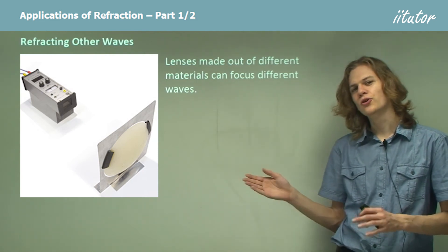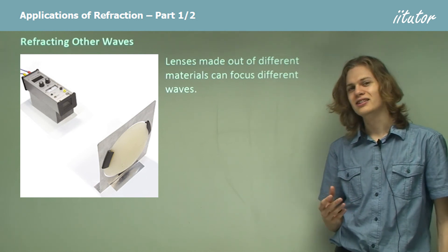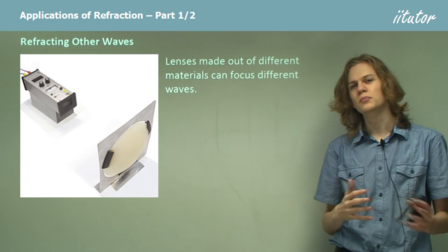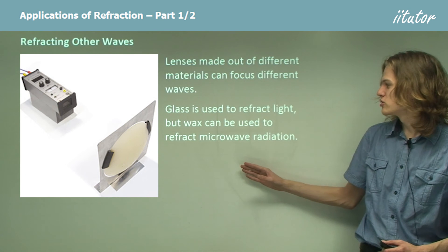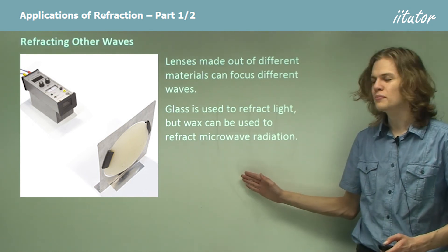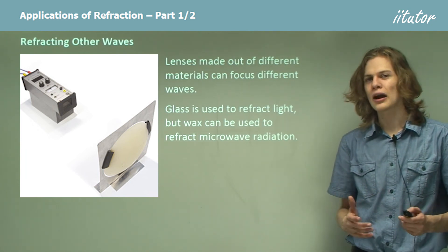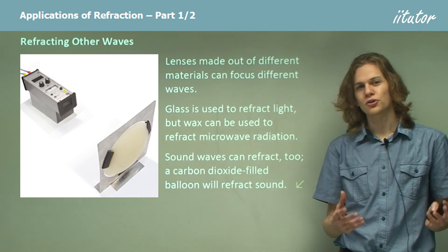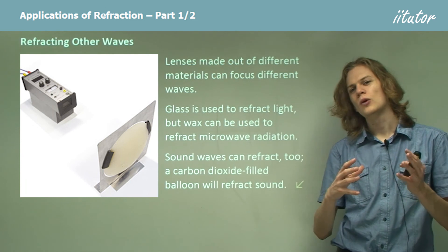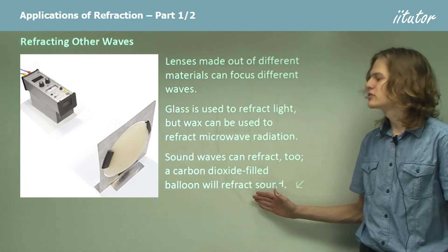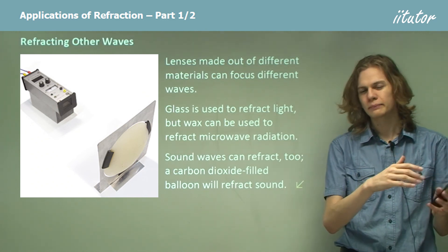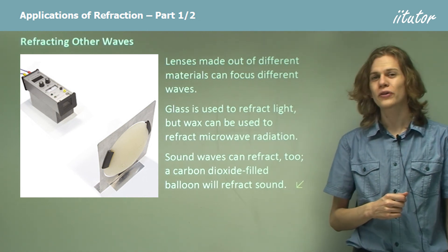Lenses made out of different materials can focus different sorts of waves. So far we've only talked about light, but we can make lenses out of plastic, glass, or even water. Different sorts of electromagnetic waves are transparent to different materials — glass is used to refract light, but wax can be used to refract microwave radiation. Over here we have a photograph of a lens made of wax for a microwave emitter. In fact, electromagnetic waves aren't the only waves that can be refracted. If we have a balloon filled with carbon dioxide, we get a lens for sound waves — it will focus waves of sound to a particular point, because being a balloon it bulges outwards, making a convex lens that focuses parallel wavefronts to a single point. That's the end of the theory on concave and convex lenses and what they're used for.